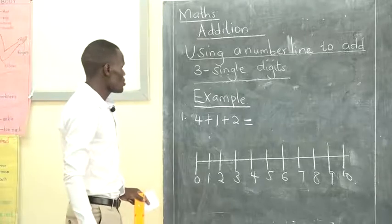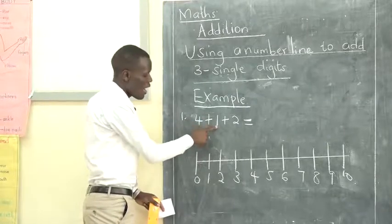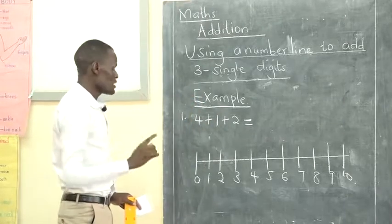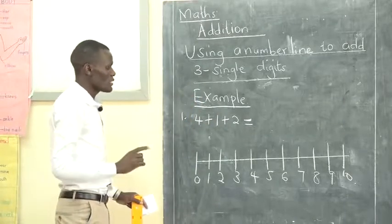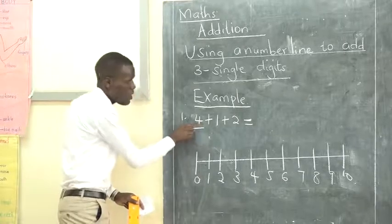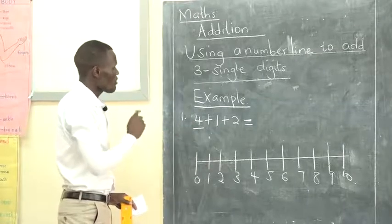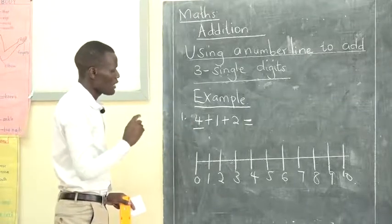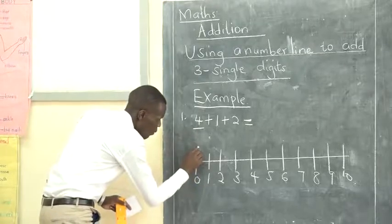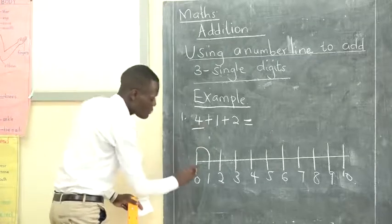Now we are going to add four plus one plus two. The first thing we always do is start from zero. Our first number is four, but we start from zero to show the four on the number line. We are counting the number of steps up to four.